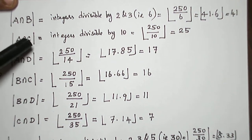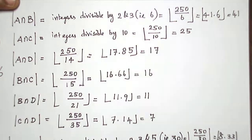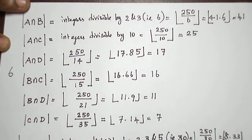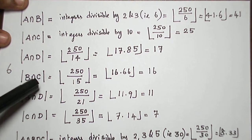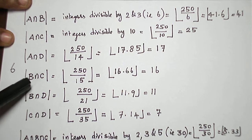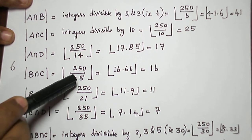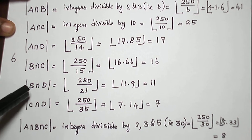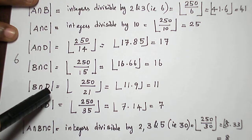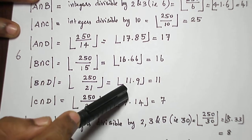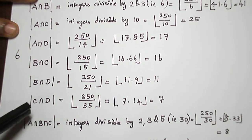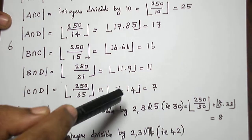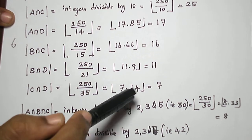A∩C: divisible by 2 and 5, that is 10, so floor(250/10) = 25. A∩D: divisible by 2 and 7, that is 14, so floor(250/14) = 17. B∩C: divisible by 3 and 5, that is 15, so floor(250/15) = 16. B∩D: divisible by 3 and 7, that is 21, so floor(250/21) = 11. C∩D: divisible by 5 and 7, that is 35, so floor(250/35) = floor(7.14) = 7.